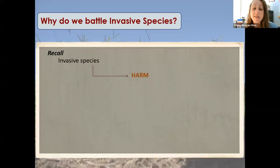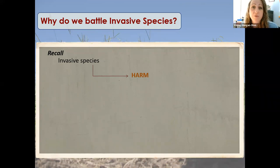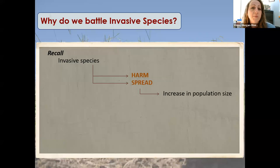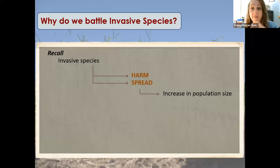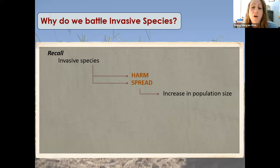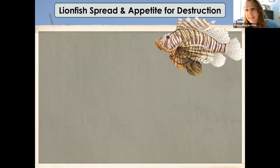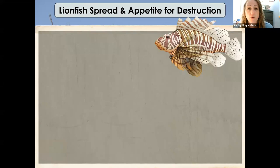If invasive species just stayed in place that would be manageable, but invasive species are also very good at spreading — that's where the word 'invasive' comes from. They invade and take over a territory. Maybe they produce more eggs, more seeds, or they're drought tolerant — they're able to be more hardy. My infamous example for spread is the red imported lionfish, which is still sold in pet stores today and is not a prohibited species.